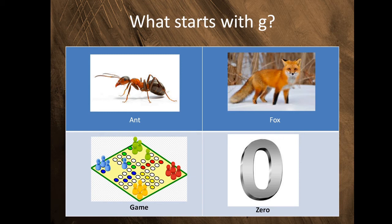Last one. What picture starts with G? Ant, fox, game, zero. Ant, fox, game, zero. What picture starts with G?